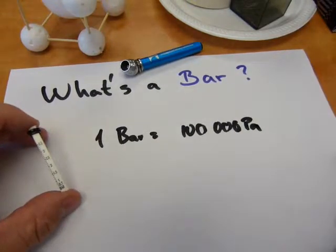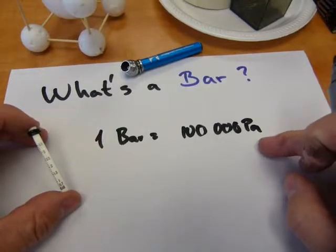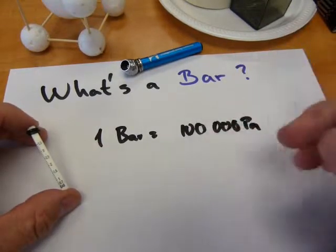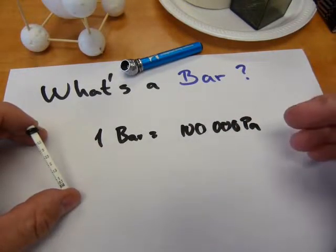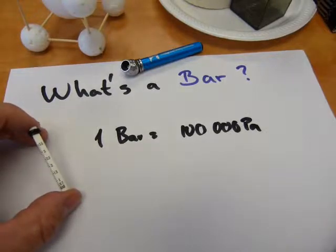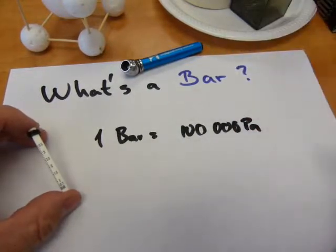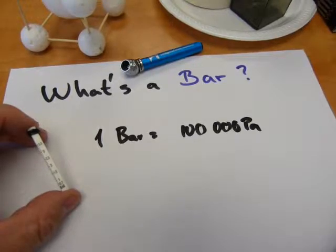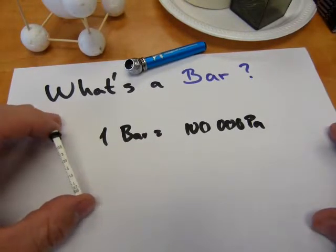So instead of calling this one mega Pascal, they just named it one bar with other metric prefixes like kilo, hecto, hectobar. The bar works.